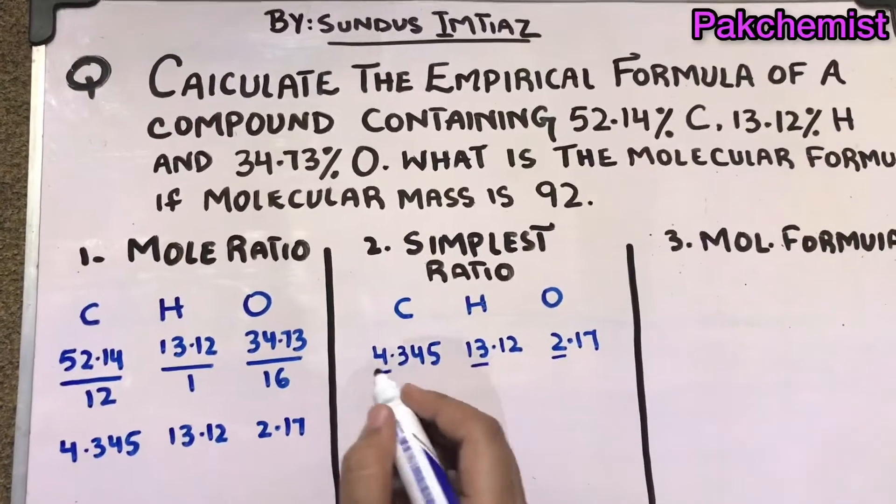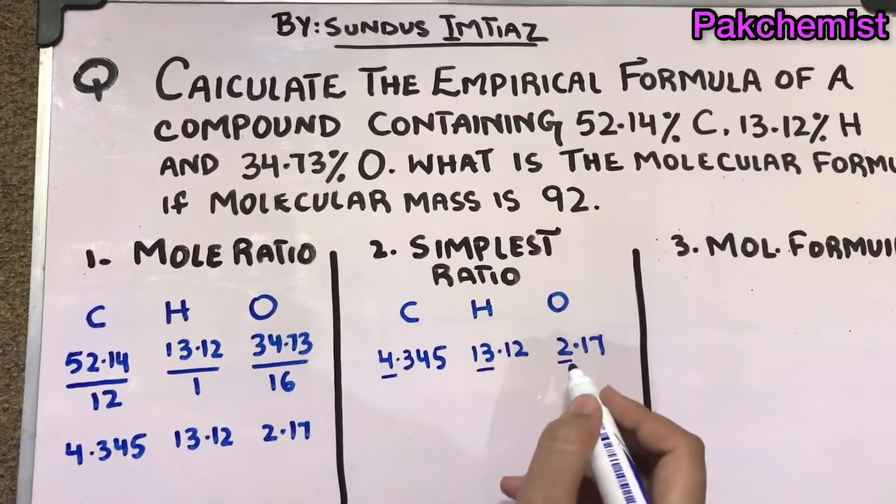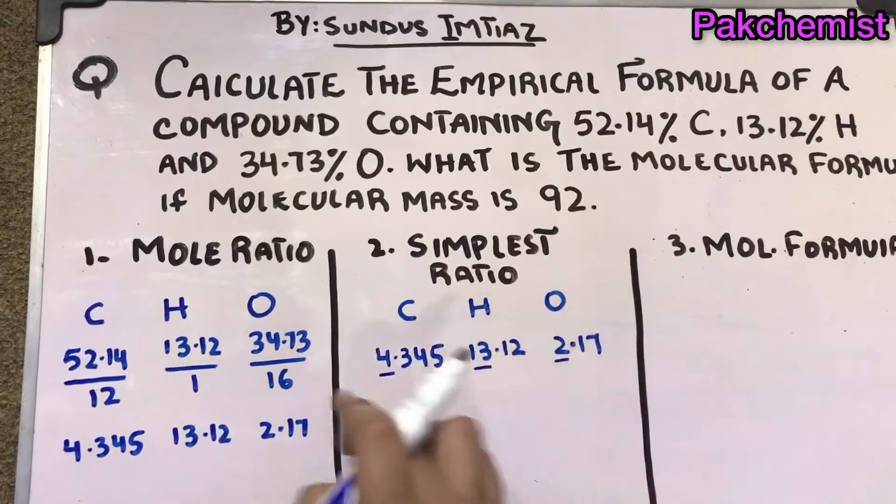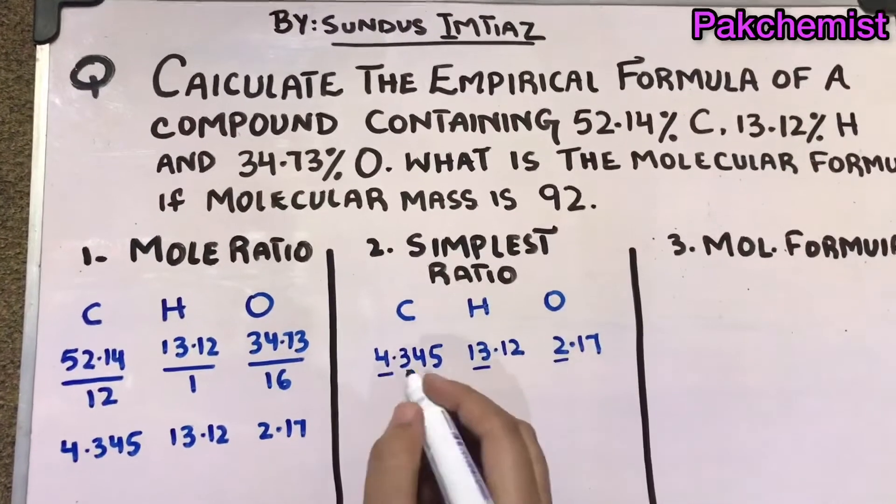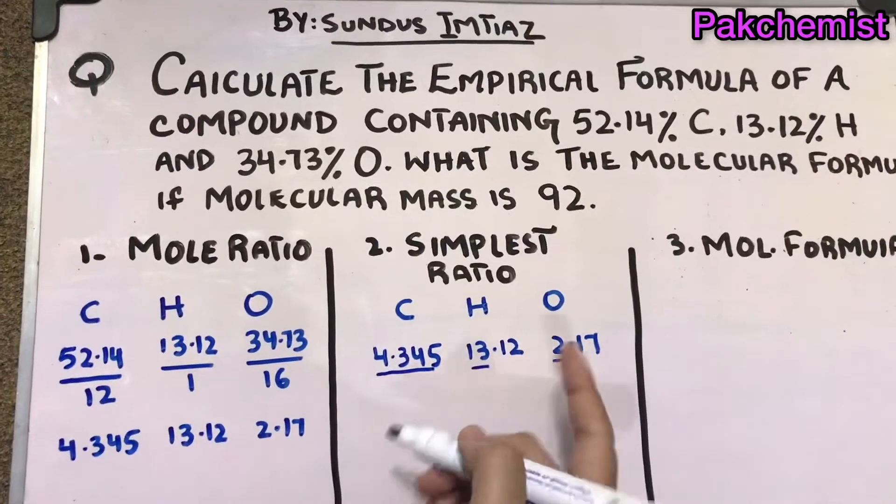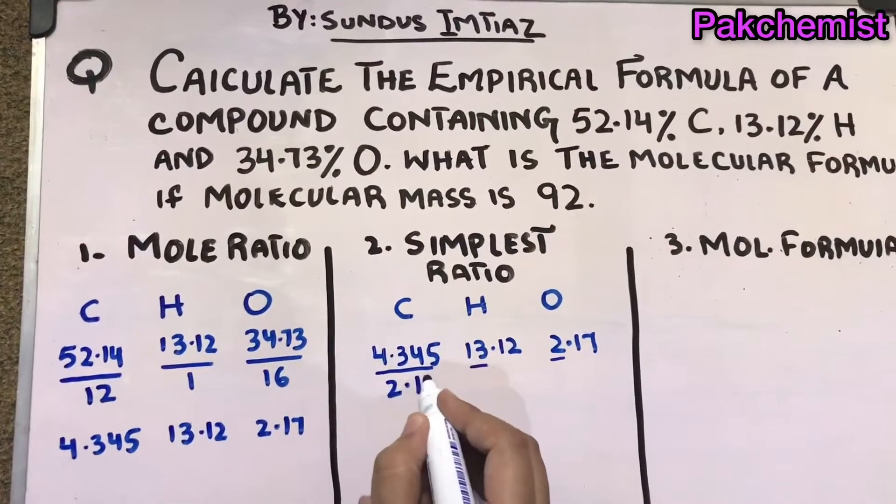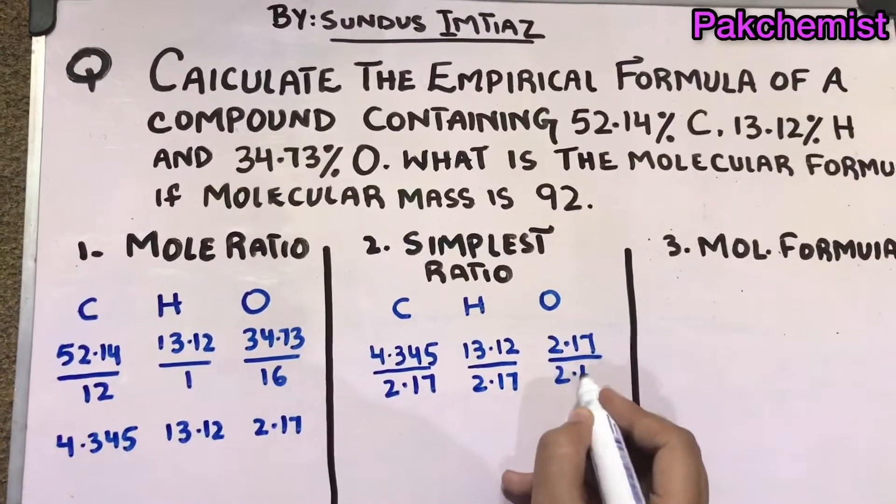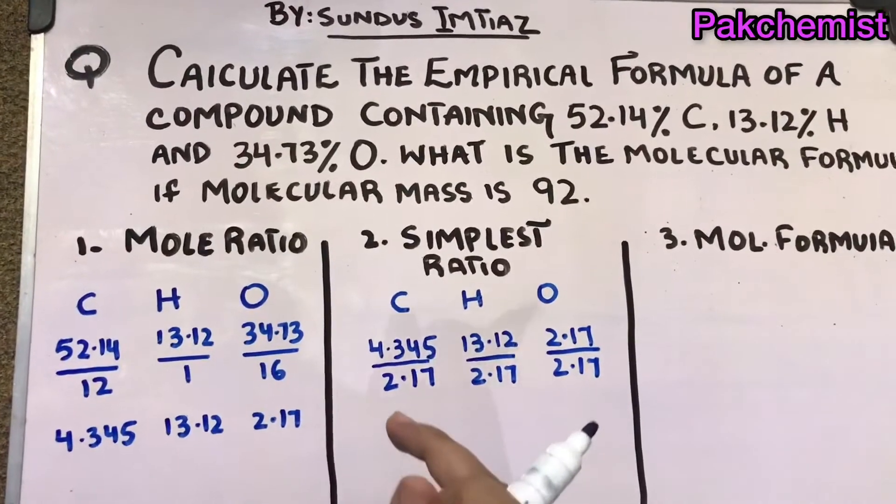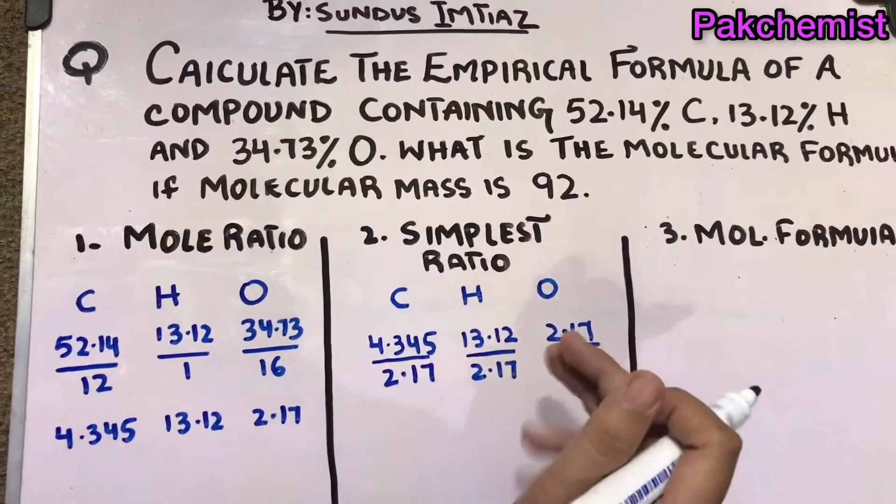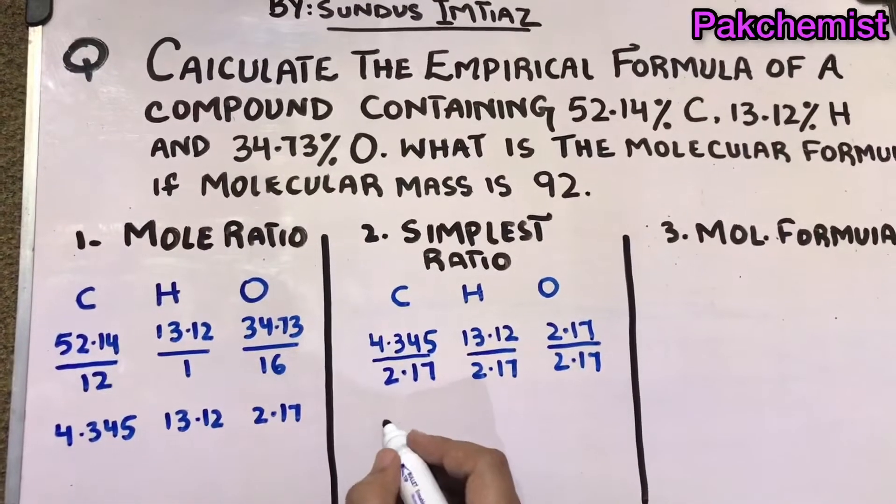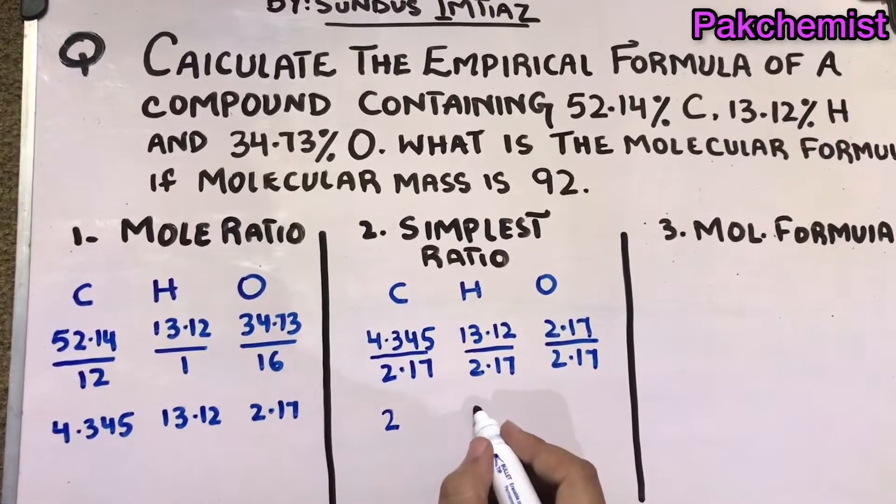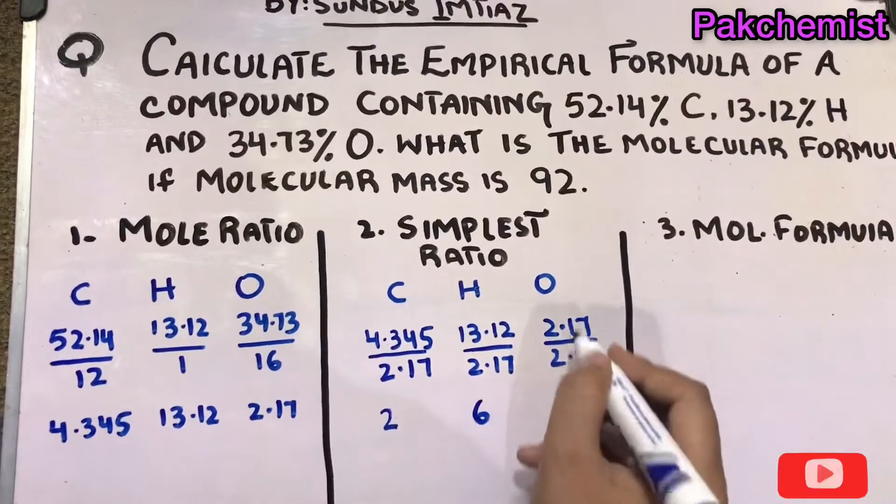These three numbers with the very smallest number - 2.17 is the smallest one, so I divide by 2.17, 2.17, and 2.17. I'm repeating: you have to divide these ratios with the smallest number. Then after dividing you will get 2, after dividing we will get 6, and of course they are the same, so 1.